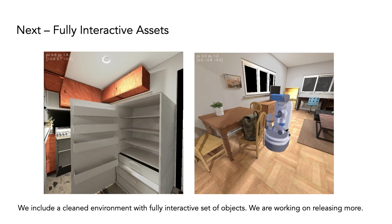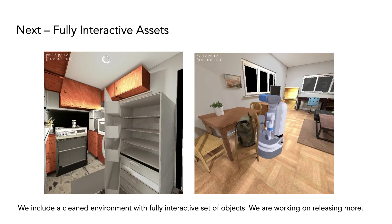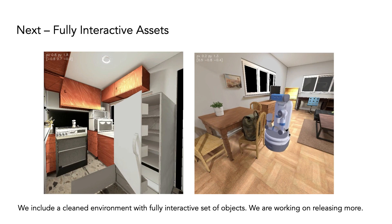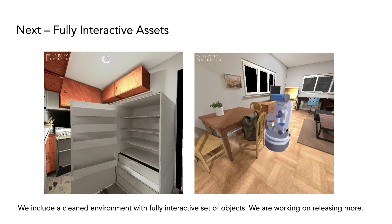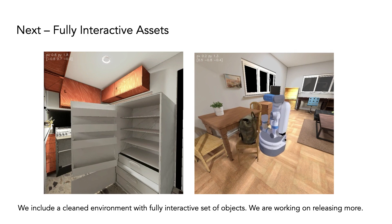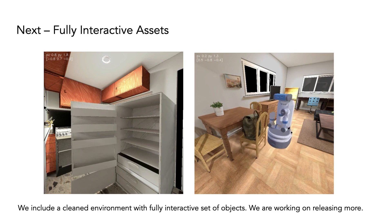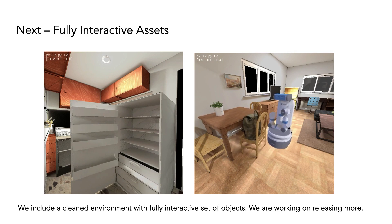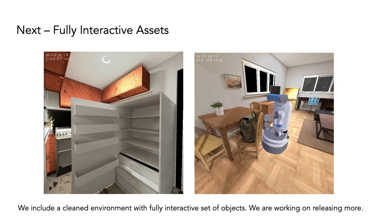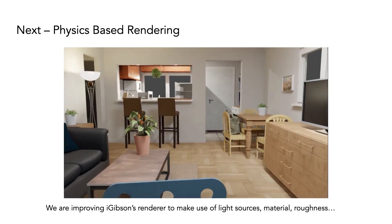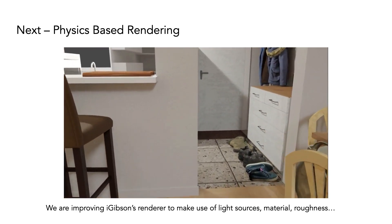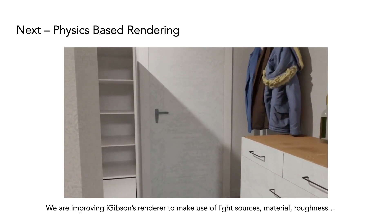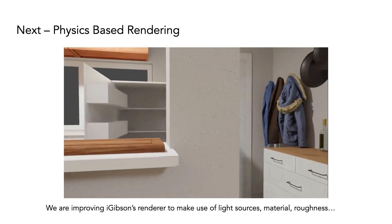The current version of the interactive Gibson environment is equipped with hundreds of large environments, 10 of them annotated with interactive instances of furniture like chairs, tables, and desks. We also include a fully interactive model where all the objects in the original model have been annotated to be interactive. We are working on releasing more of these models. We are also currently working on integrating physics-based rendering to improve the quality of our virtual images and make use of properties like material, reflection, or lights.